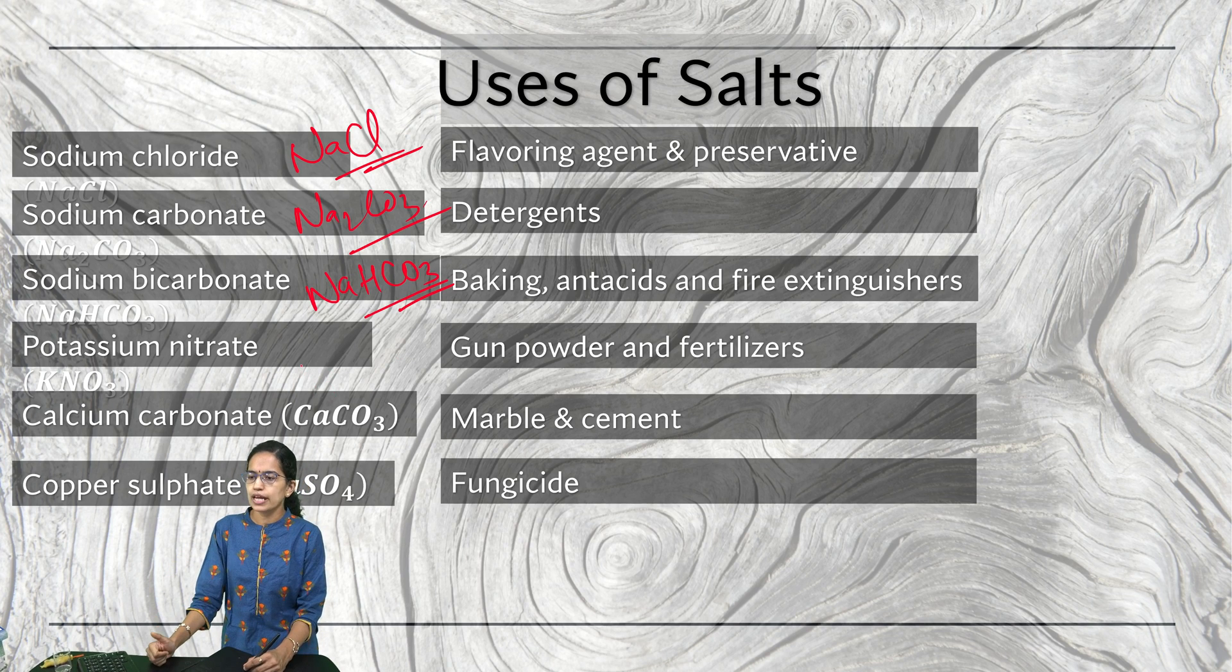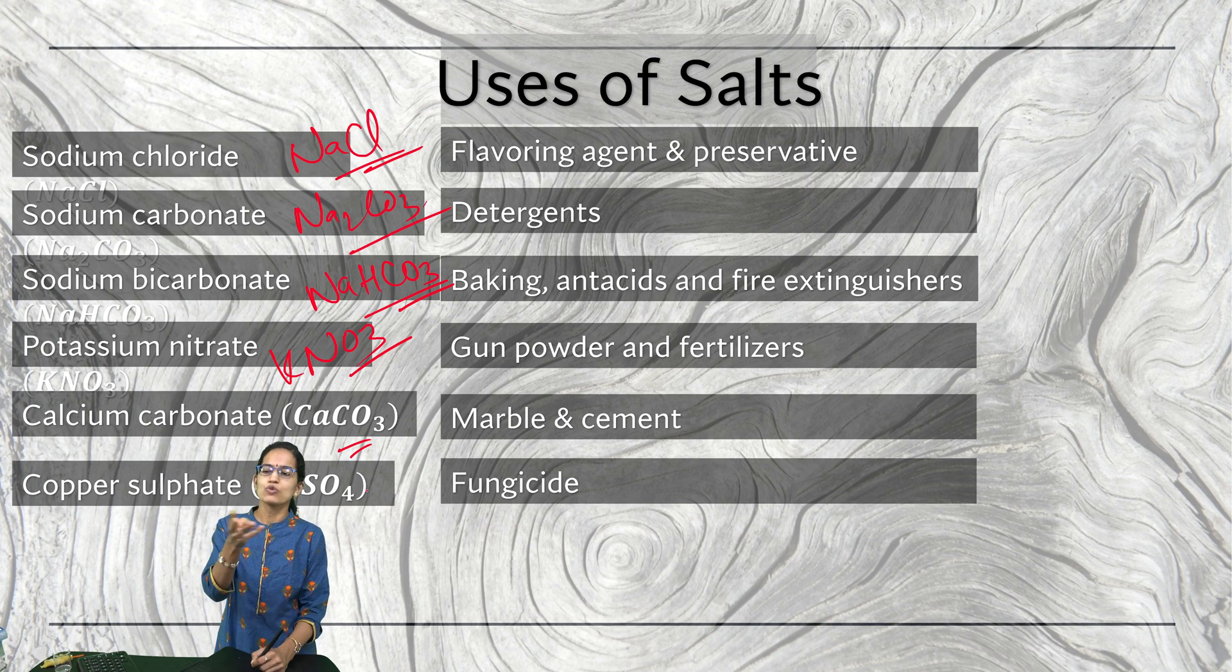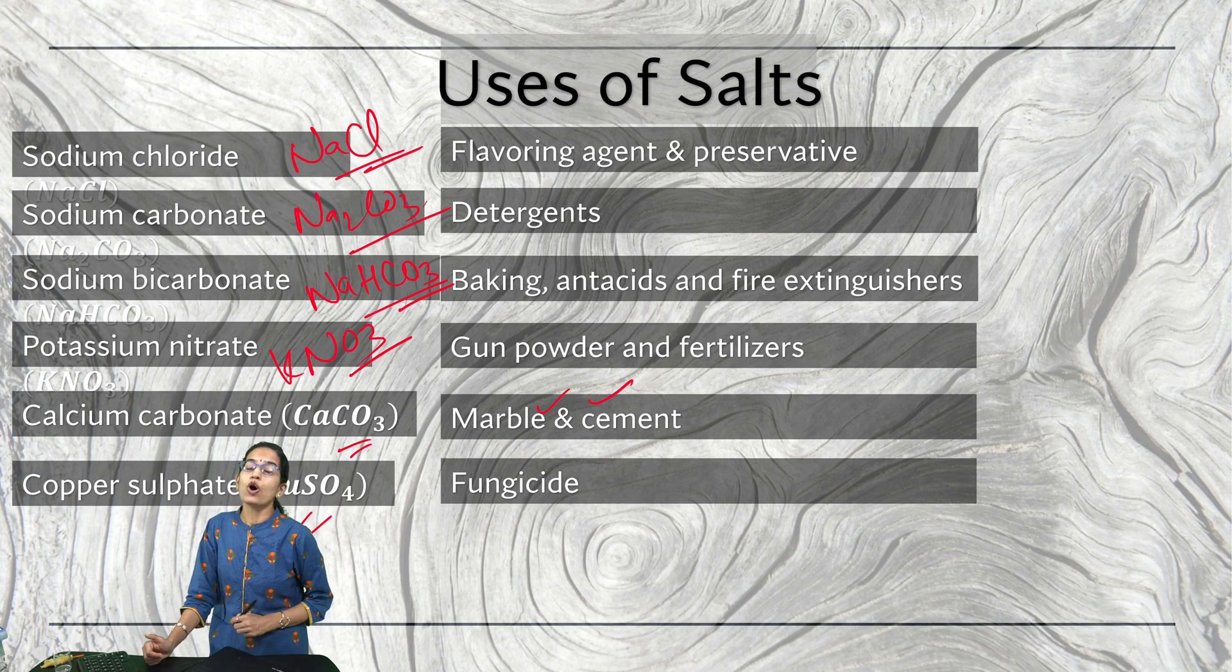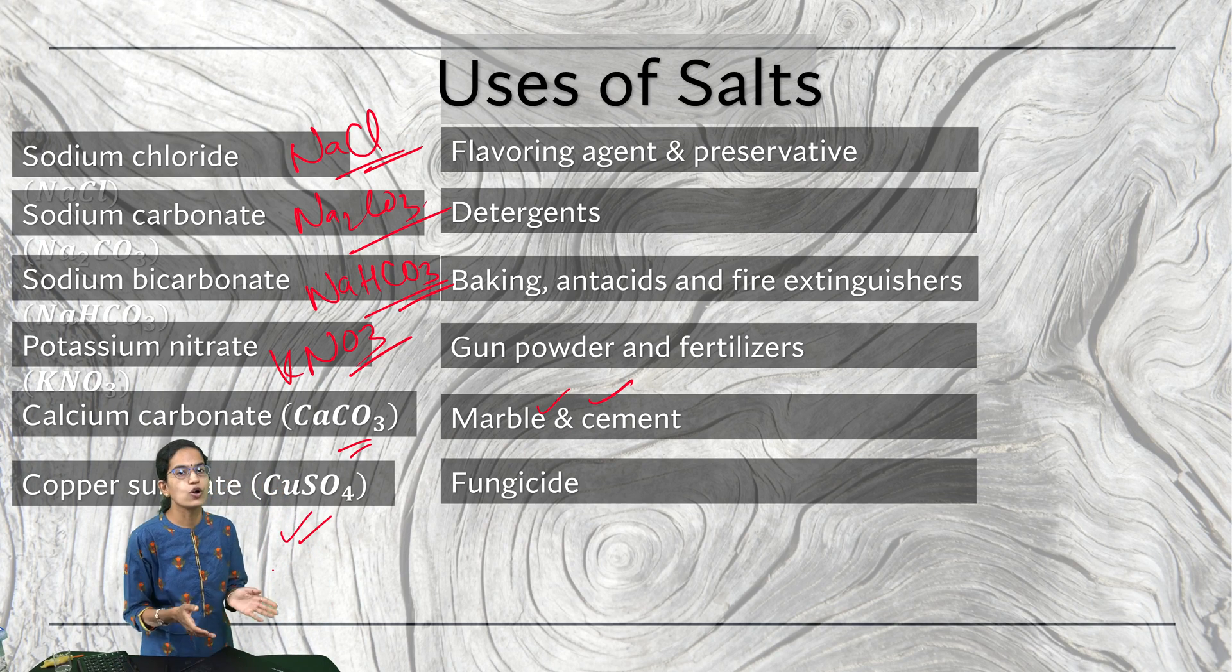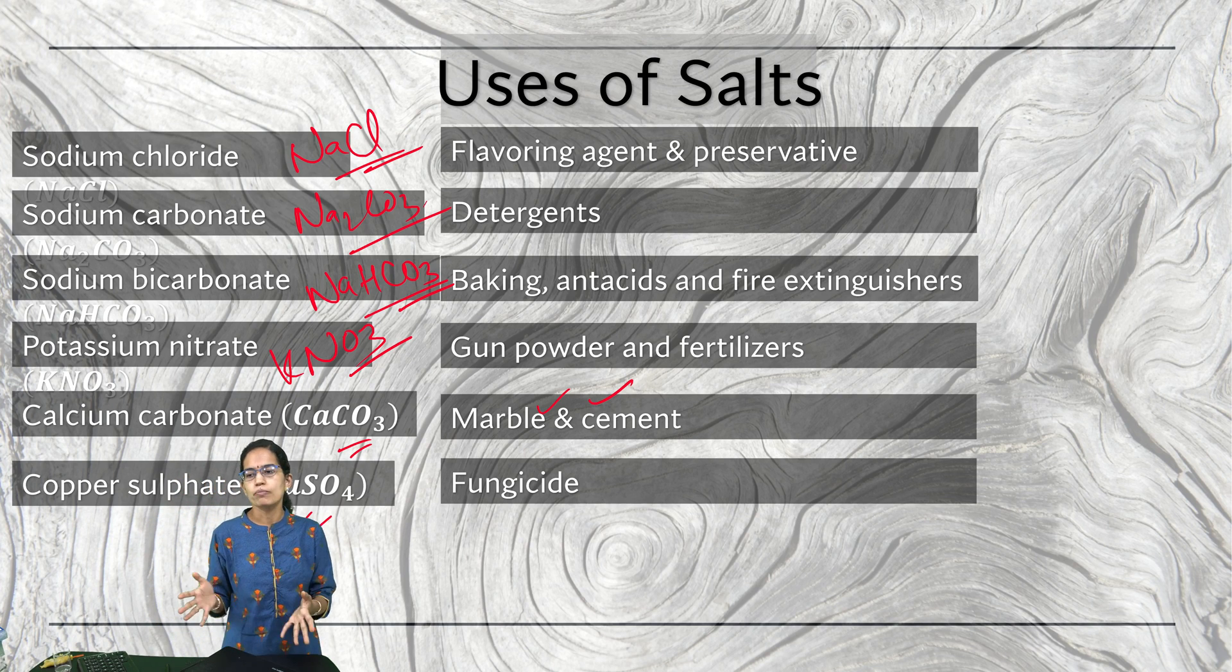Then we have potassium nitrate, KNO3, which is used in gunpowders and fertilizers. Calcium carbonate, slaked lime—we use slaked lime to form the calcium carbonate. It is the salt obtained from slaked lime. Marble formation and cement would be where calcium carbonate is used. And then we have copper sulfate. Copper sulfate is a salt which is commonly used as fungicides. These are some of the common salts and their uses that we understand.